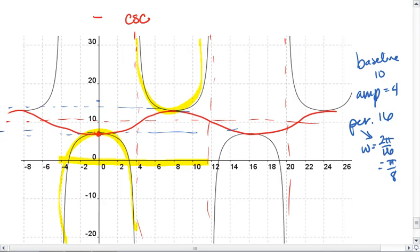And there is no horizontal shift. So this gives us negative 4, that's our amplitude, cosecant. We'll use our angular speed, pi over 8x, and then our baseline of plus 10.